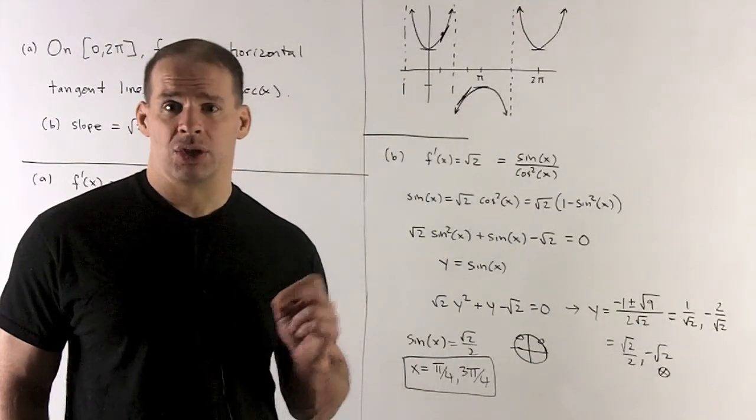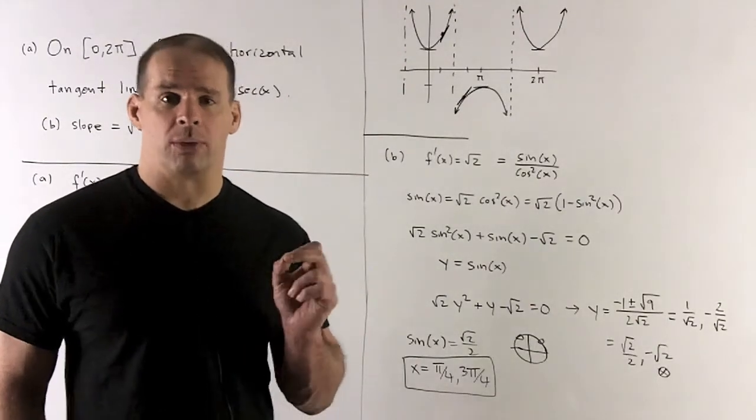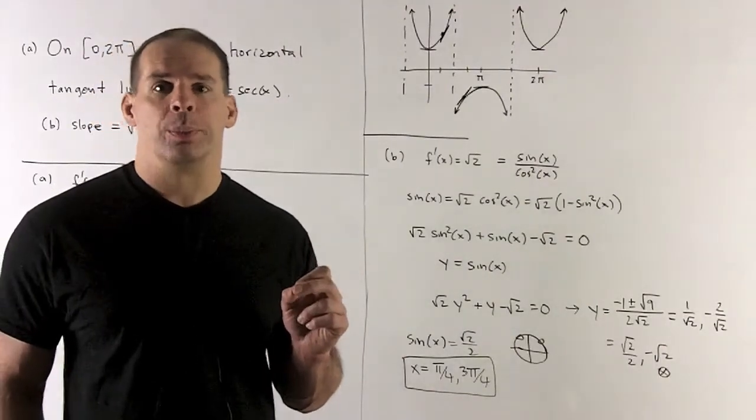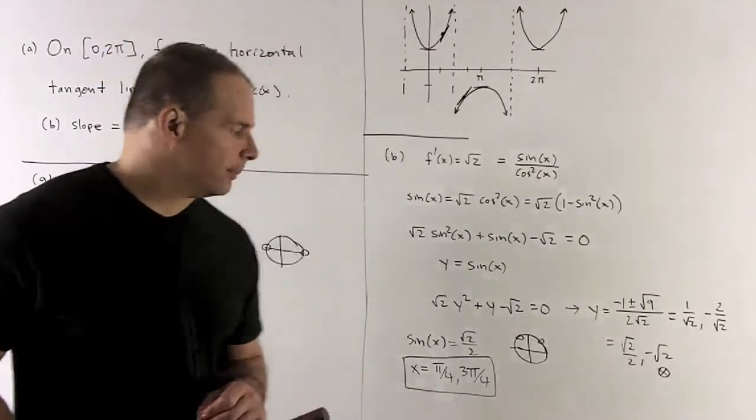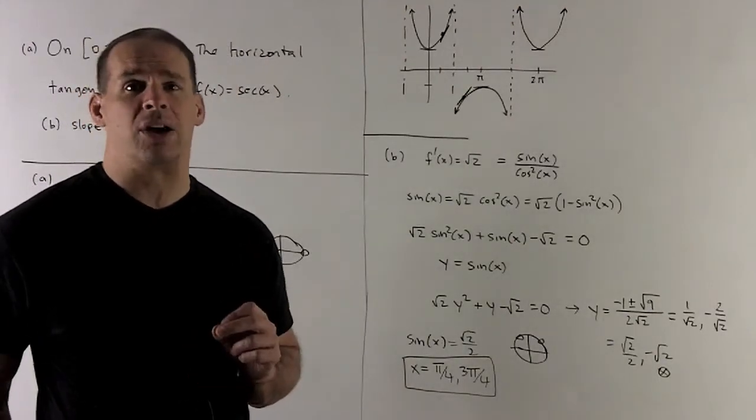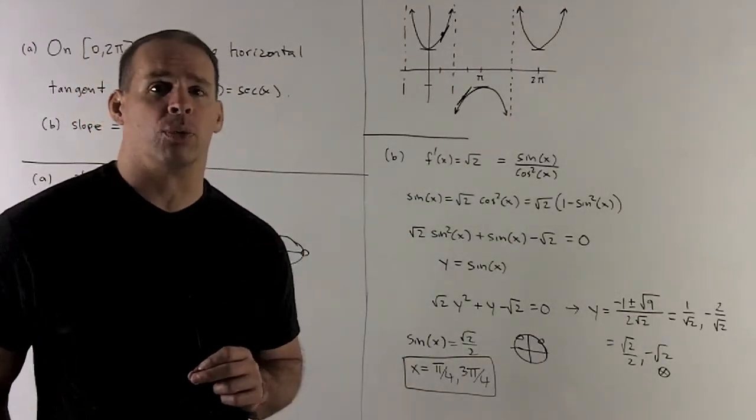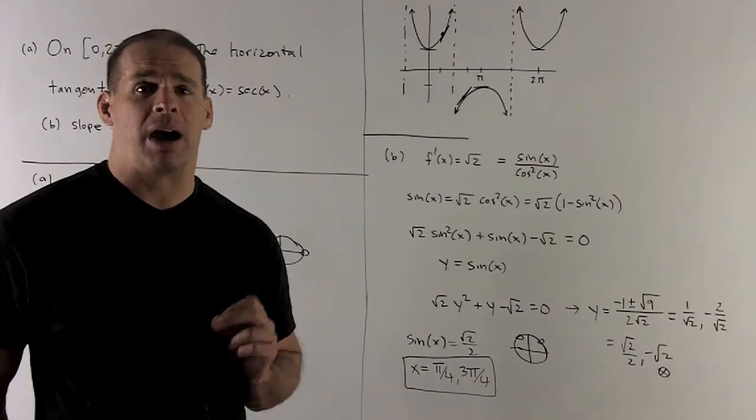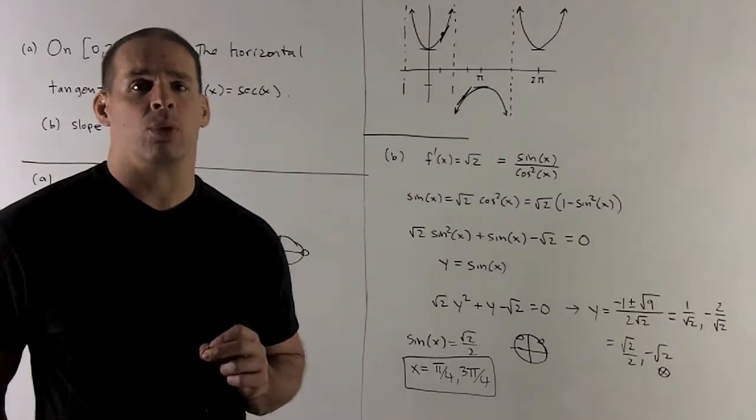So when is sine equal to √2/2? Well, remember, sine is going to be the y value, so we're looking at these two points here in the unit circle, in the first and second quadrant. They're going to be multiples of π/4. So our answer is going to be π/4 and 3π/4.